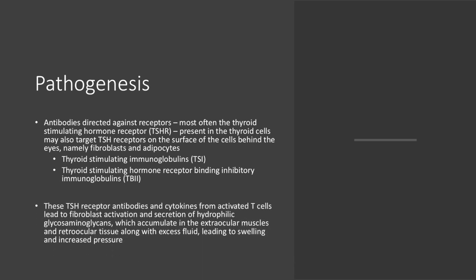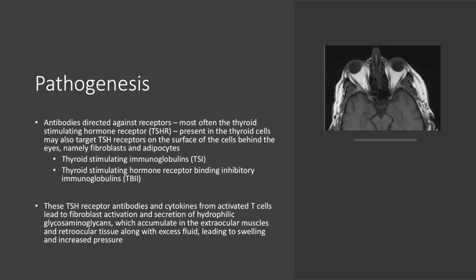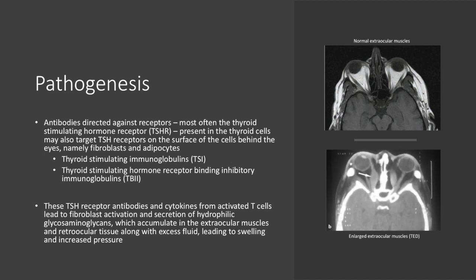These TSH receptor antibodies and cytokines from activated T-cells lead to fibroblast activation and secretion of hydrophilic glycosaminoglycans, which accumulate in the extraocular muscles and retroocular tissue along with excess fluid as the osmotic pressure increases, leading to swelling and increased pressure. This figure demonstrates the appearance of normal extraocular muscles. This figure shows the marked swelling of the retroorbital muscles, often well visualized on MRI or CT scanning.